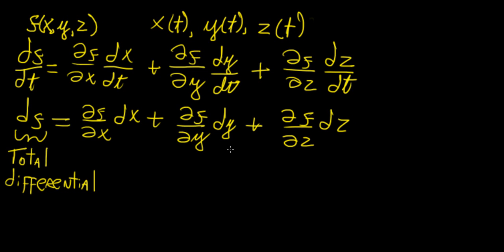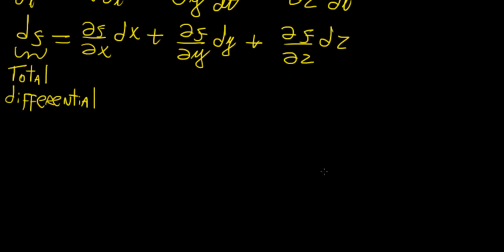This is quite a useful interpretation of the derivative, because if we want to find the total change of f, we can apply this formula and get an approximation. So why might this actually be useful? Well, this could be useful when we have different variables changing at the same time and we want to find the total change with respect to our function. So let's have an example.